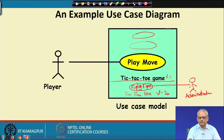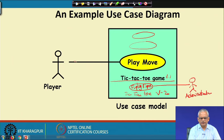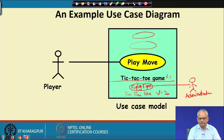The boundary is not really a mandatory requirement for modeling a use case. The essential elements are the ellipse indicating the use case, the association relation, and the user. The boundary is optional, but it helps to clearly show what functionalities are available, and we normally write the name of the software.